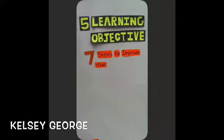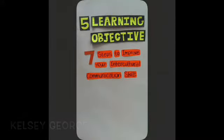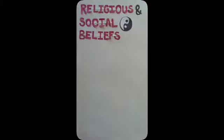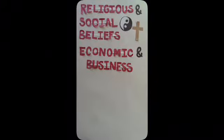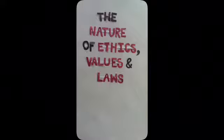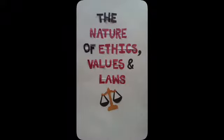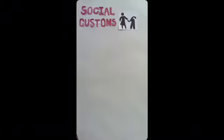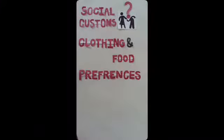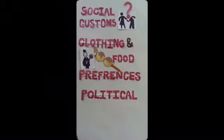Learning Objective 5: Seven steps to improve your intercultural communication skills. Step 1 — studying other cultures: understand religious and social beliefs, learn about economic and business institutions, appraise the nature of ethics, values, and laws, understand social customs, learn about clothing and food preferences, and assess political patterns. Studying other cultures prepares you for interaction with them.